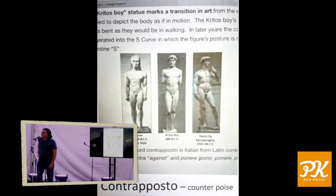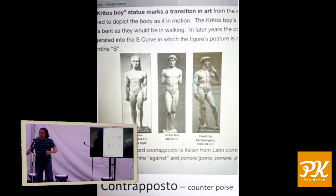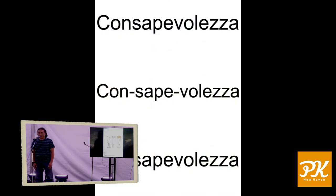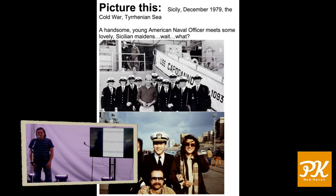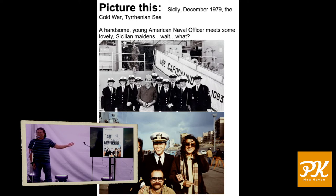But the big C — I'm going to repeat it three times because I just came up with this in Palermo on my 65th birthday — is consapevolezza. Consapevolezza means in Italian 'awareness.' That's all it means. Awareness is what I want you to arrive at. Picture this: Sicily, 1979. A handsome American naval officer meets some Sicilian maidens.